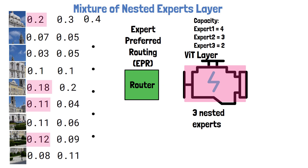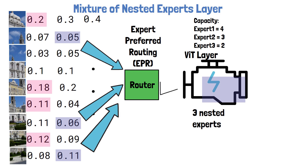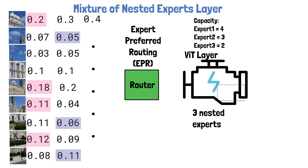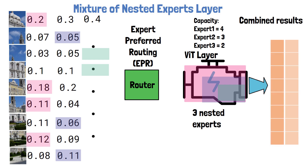The router takes the four tokens with the highest probability for the first expert, marks them with the expert color, and routes those tokens to the first expert. Then, for the second expert with a capacity of three tokens, we mark the three tokens with the highest probabilities. Two out of three were already handled by the previous expert. To avoid propagating only very important tokens to all experts while skipping others, we limit selection to the top tokens not yet selected, choosing the next top two unchosen tokens. For the third expert, which has a capacity of two tokens, we choose the only two tokens not yet chosen. The smallest expert handles the least important tokens. Finally, all three nested experts process their assigned tokens, the outputs are combined, and propagated to the next layer. Note that tokens routed to smaller nested experts are downsized to the dimension of that nested expert.